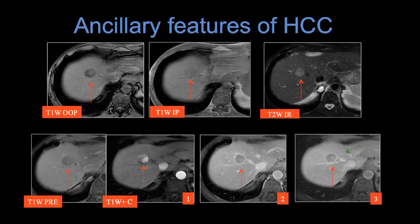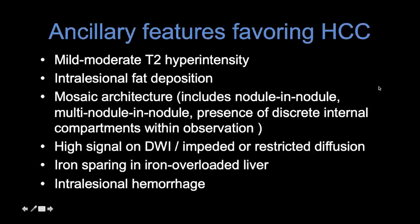When looking at these patients, we're also looking for ancillary features. On T1-weighted in-phase versus out-of-phase images, we can see loss of signal indicating intralesional fat. This has increased signal intensity on T2-weighted images — another ancillary feature of HCC. Other ancillary features include: mild T2 hyperintensity (compare it to the spleen — the whiteness of spleen, not CSF), intralesional fat, mosaic architecture, high signal intensity on high B-value diffusion or restricted diffusion on ADC maps, iron sparing in an iron-overloaded liver, and intralesional hemorrhage. All of those will lead you to the site of HCC.